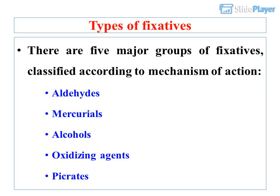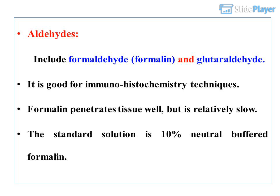Types of fixatives: There are five major groups of fixatives, classified according to mechanism of action: Aldehydes, Mercurials, Alcohols, Oxidizing Agents, and Picrates. Aldehydes include formaldehyde, formalin, and glutaraldehyde. They are good for immunohistochemistry techniques. Formalin penetrates tissue well but is relatively slow. The standard solution is 10% neutral buffered formalin.